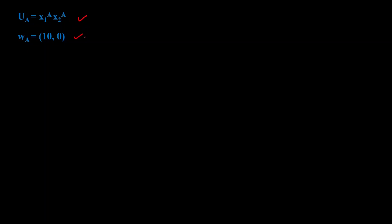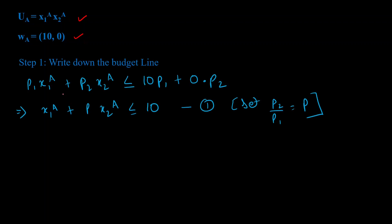Let's start by solving from A's perspective. Given A's utility function and initial endowment, the first step is to write down the budget constraint. On the left-hand side are the combinations of good one and good two that A can afford. A's income is the value of his endowment: 10 units of good one priced at p1 each gives 10·p1, plus zero units of good two, so total income is 10p1. In an exchange economy we work with relative prices, so I'll normalize by dividing both sides by p1. This gives us: x1a + p·x2a ≤ 10, where p = p2/p1.